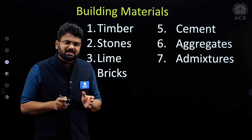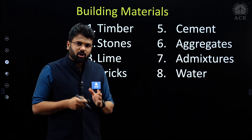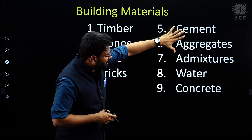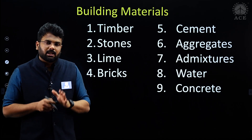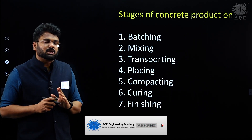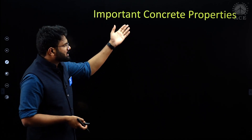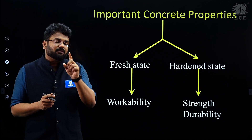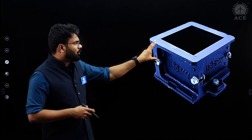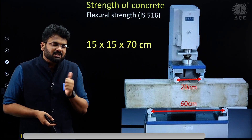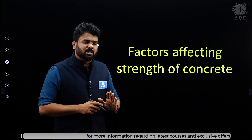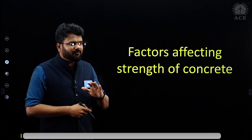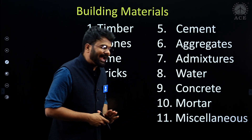The next chapter is admixtures, where different admixture types will be understood. After that, we have the water quality chapter covering quality of water for mixing your concrete. Then in the concrete chapter we will understand the process of getting your concrete and different properties — in the fresh state: workability; in the hardened state: strength and durability. We will cover how to measure compressive strength, how flexural strength is measured, factors affecting strength and workability, and non-destructive testing.